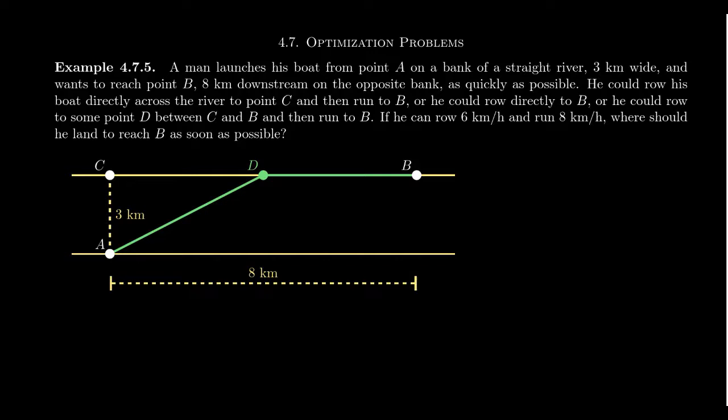He could row his boat directly across the river to some point C and then run directly to B. So one option is he just goes directly across and then runs the whole way. That already is going to maximize the distance that he travels, so that might not be the best idea. Another option is that he could row directly to point B from A. That would actually minimize distance. Or he could go from A to some point D in the middle and then run the rest of the way. What's the best option here?